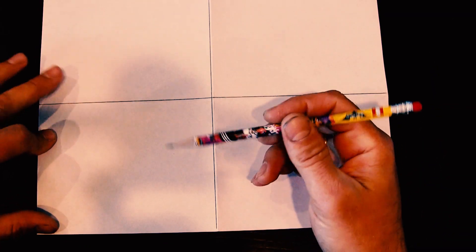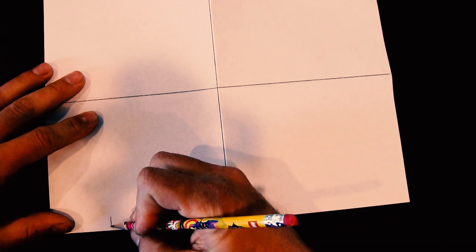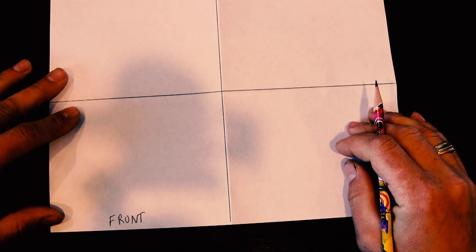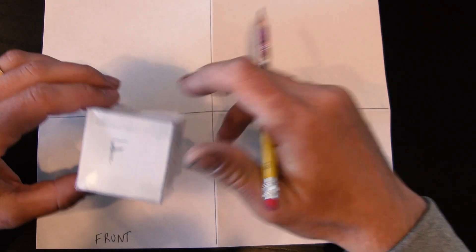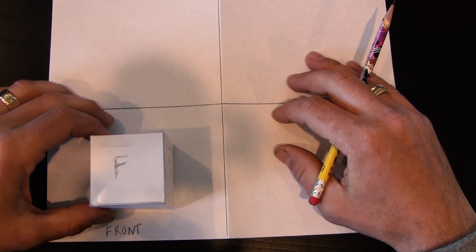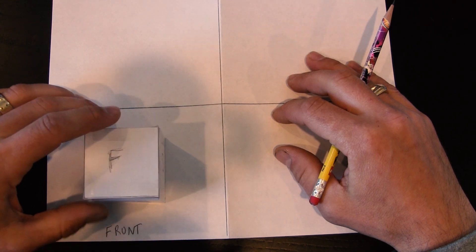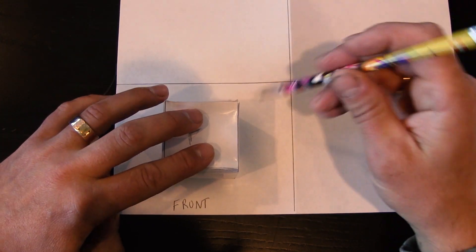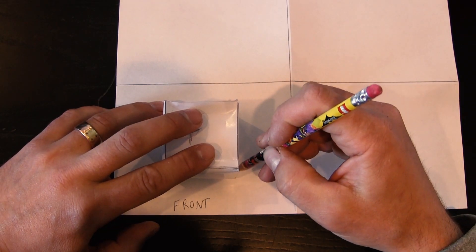Now it's time to draw. This quadrant lower left absolutely has to contain the front view in a multi-view drawing. Go ahead and label yours there as well. Then grab your cube that you previously had made, set it right in this place so the F is facing up, and you can just go ahead and trace that shape.